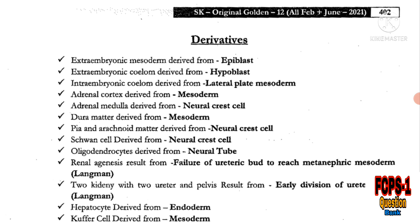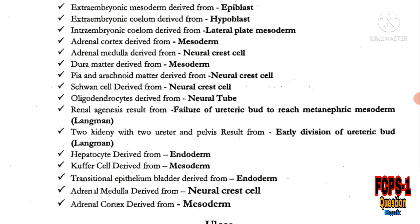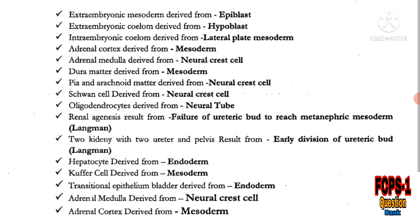Schwann cells are derived from neural crest cells. Oligodendrocytes, which form the white matter of the brain, are derived from the neural tube. Renal agenesis results from failure of the ureteric bud to reach the metanephric mesoderm.